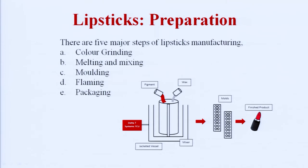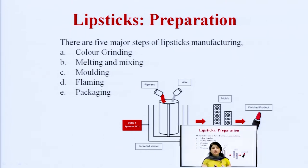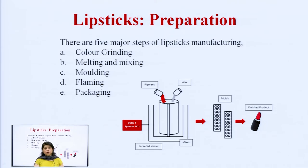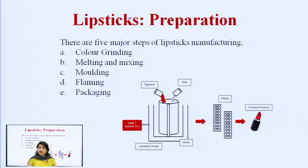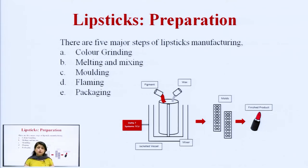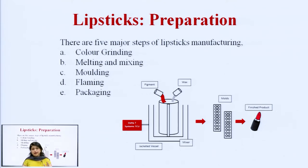Now we will learn how to prepare lipsticks in the lab. The first step is grinding: whatever pigments or colors you are going to use in your formulation, those powders must be ground to a uniform particle size. The second step is melting and mixing: the waxes to be used in the formulation must be melted and mixed properly.